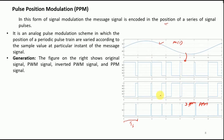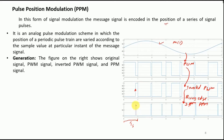A simple approach to generate PPM is to first create the PWM signal, then invert it to get the inverted PWM. After that, the rising edge of the inverted PWM is detected and a small duty cycle is induced to produce the pulse position modulation signal.